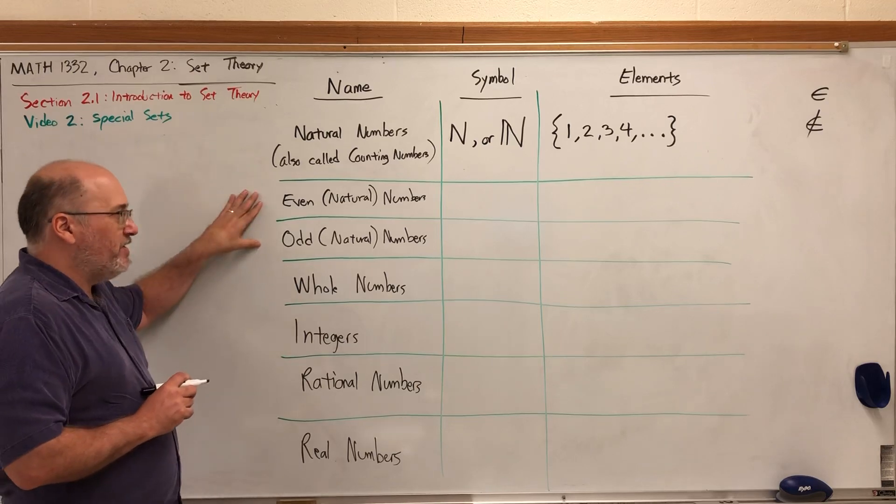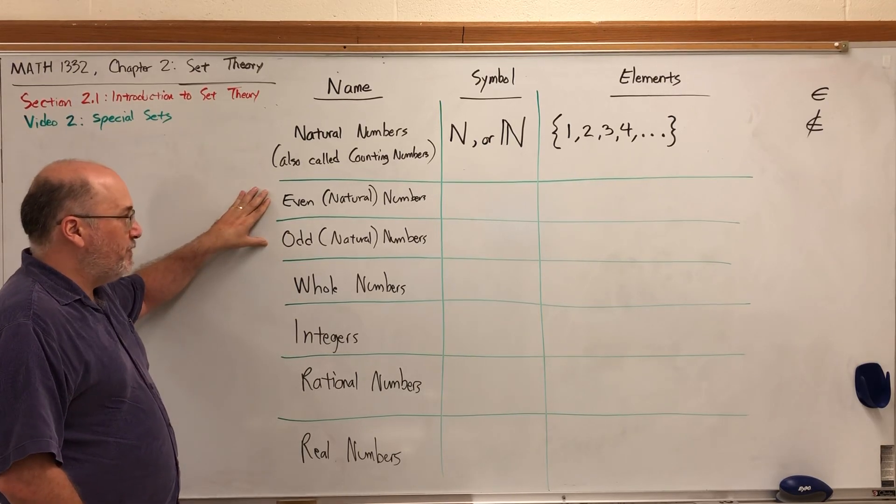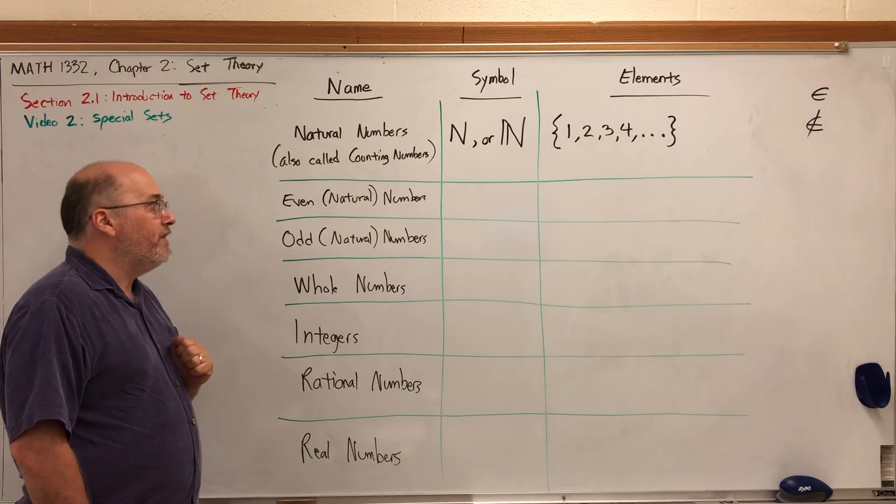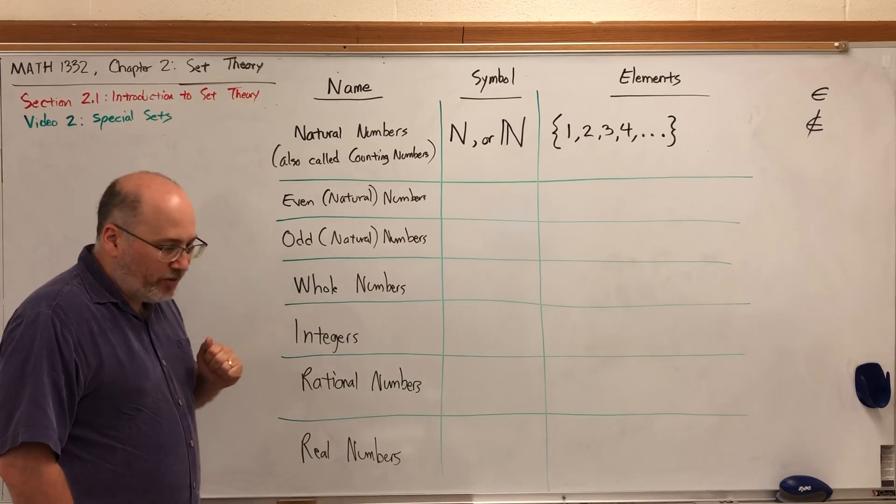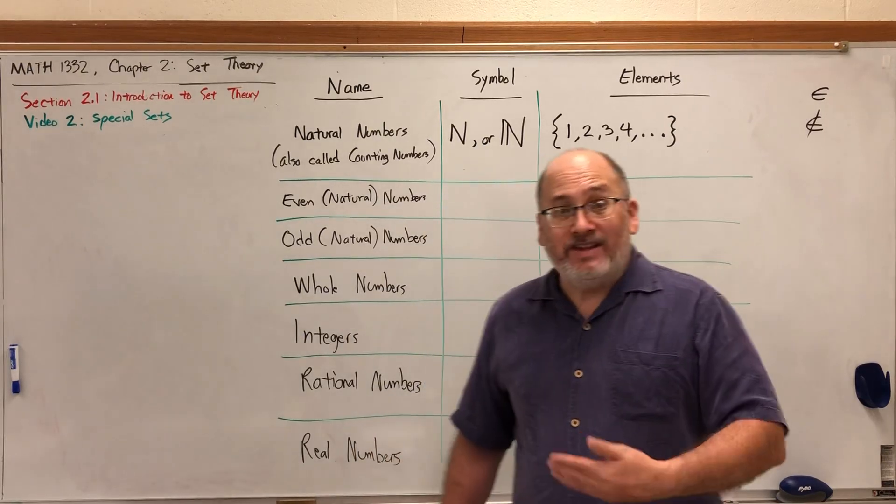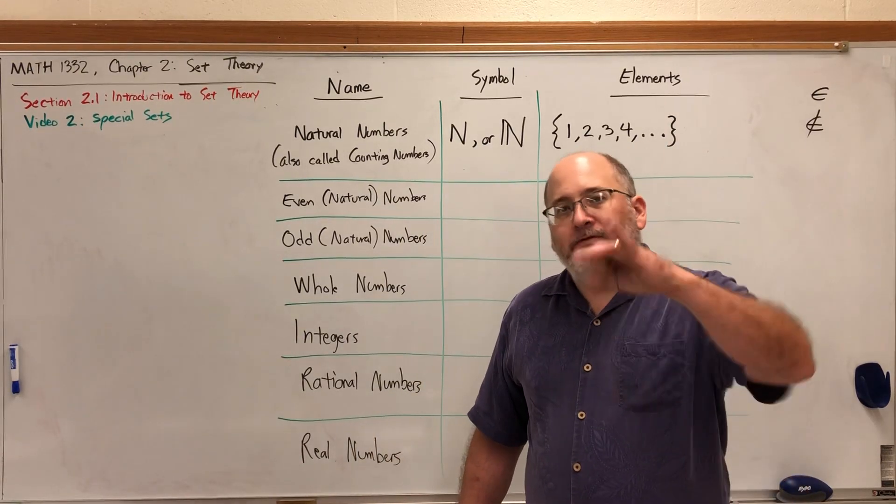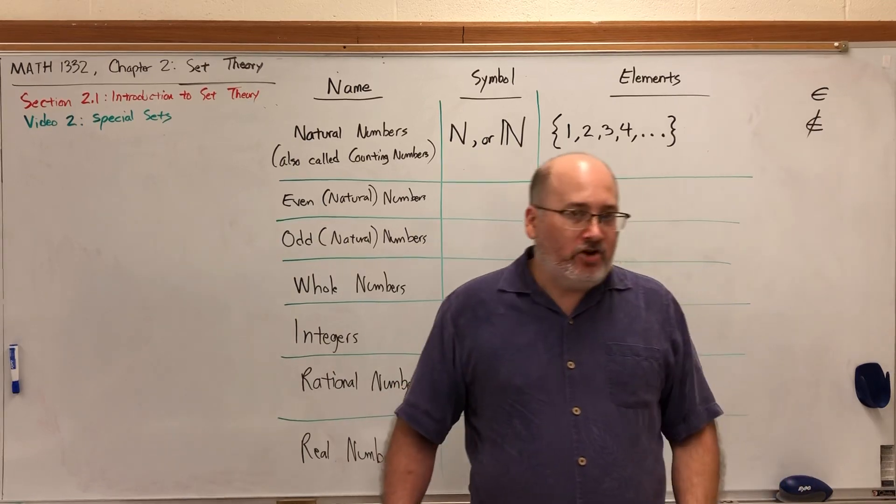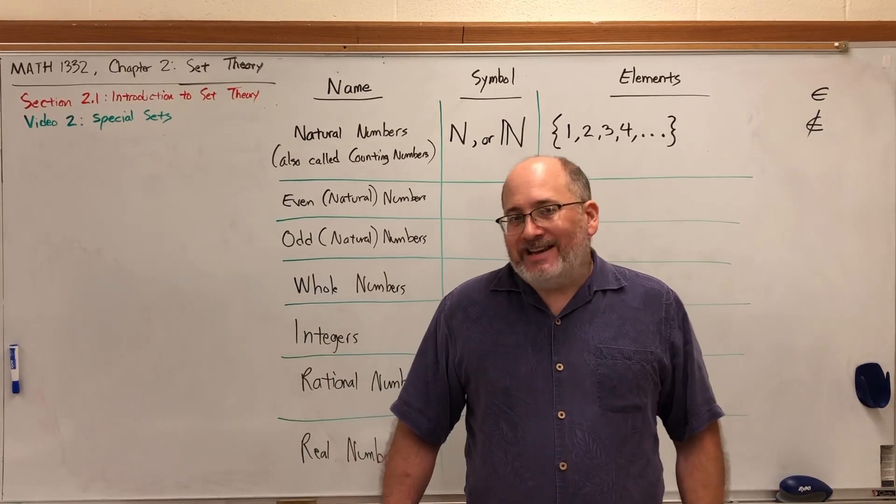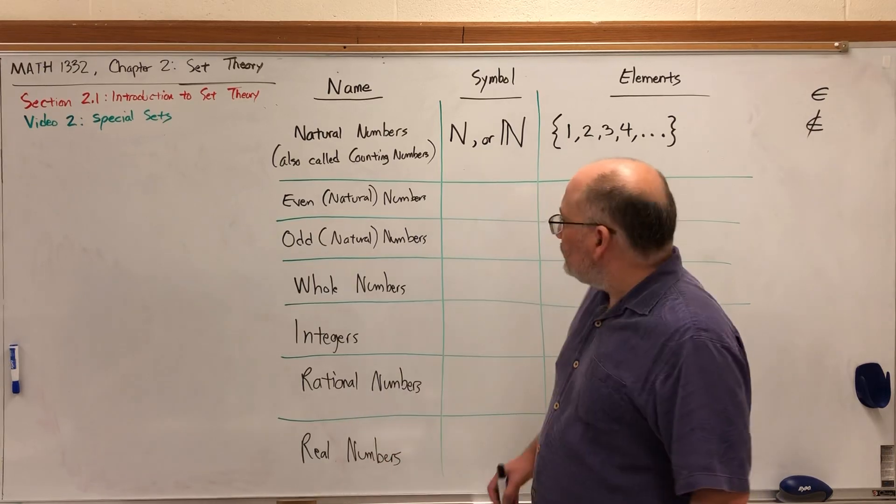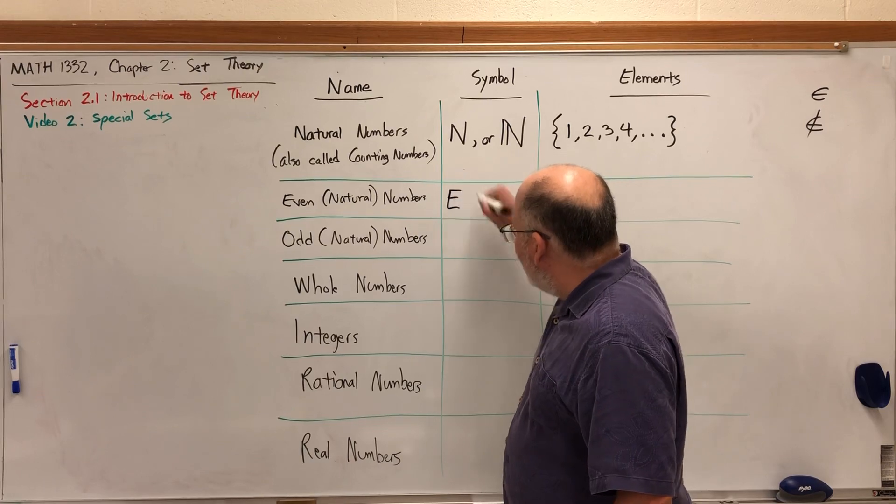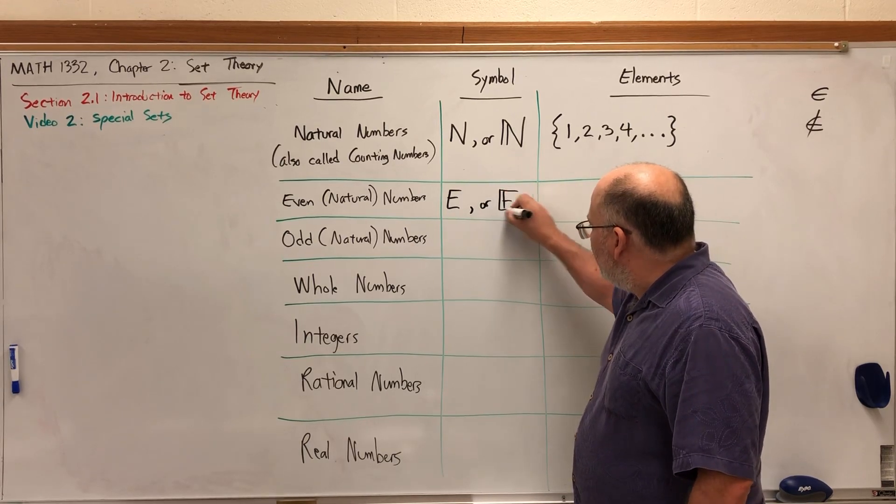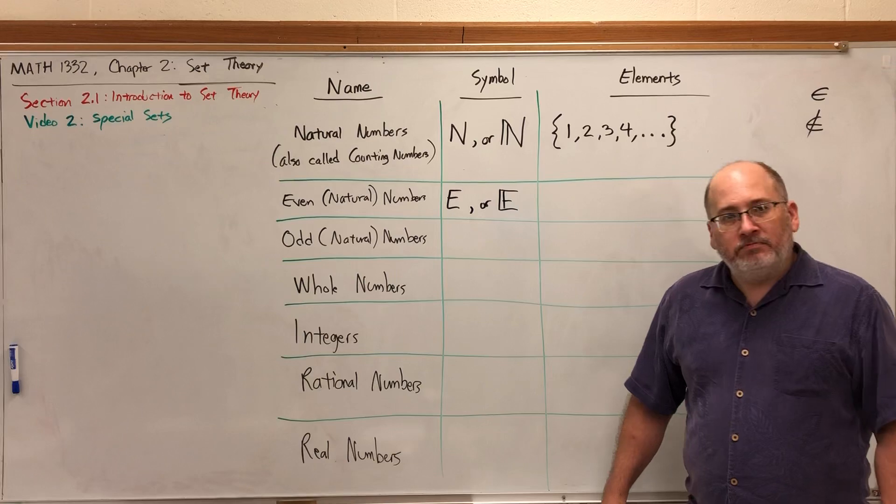There are two subsets of the natural numbers: even natural numbers and odd natural numbers. What makes a number even or odd is whether or not it's divisible by two. An even number is any number that is divisible by two. The symbol for even numbers is a capital E.